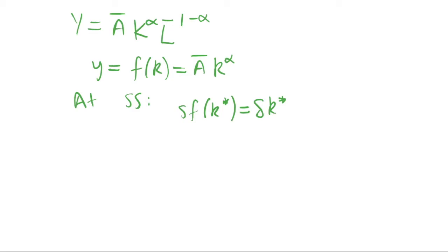What we can do is then substitute this in here. So we know that this f of k is equal to A bar k alpha, so we just substitute that in: s A bar k star to the alpha, and that is still equal to our depreciation term here. And now all we want to do is solve for k star, and this will give us the value of k star at our steady state.